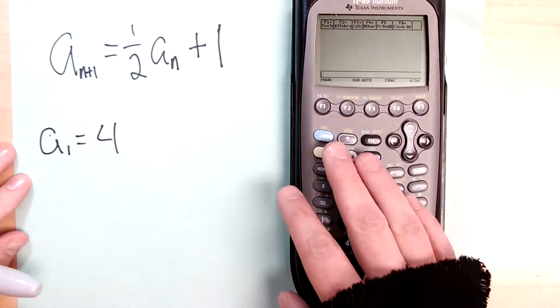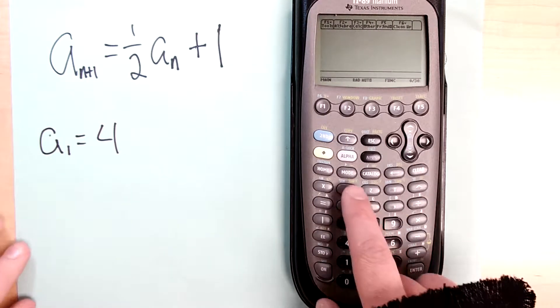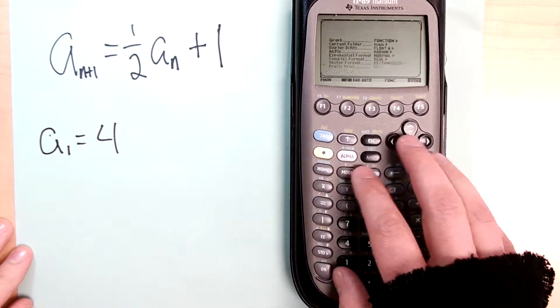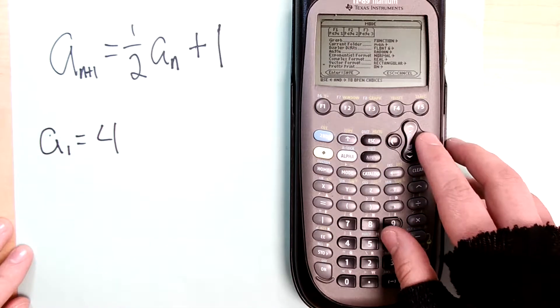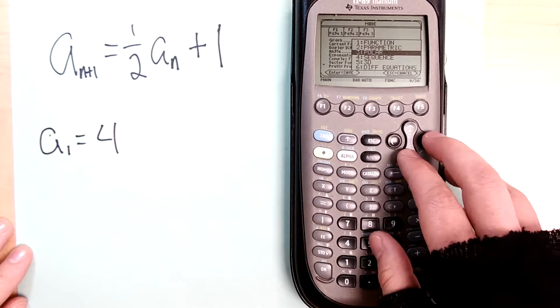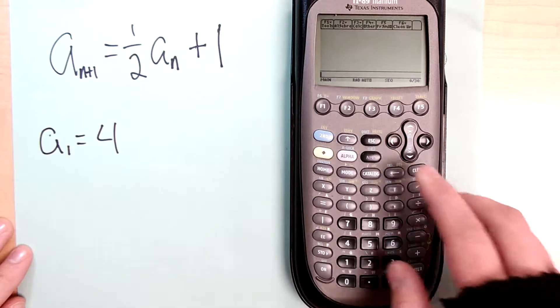Alright, so you're in your home screen. First thing you want to do is make sure you're in the right mode settings. You're going to press the mode button and make sure that your graph isn't on functions but on sequences. So go down to sequences. Make sure that you hit enter not once but twice because otherwise it won't save it.